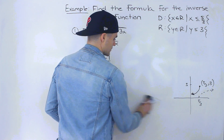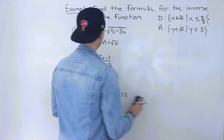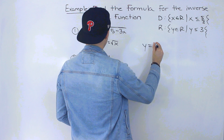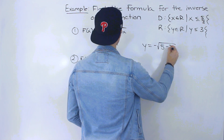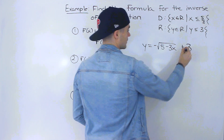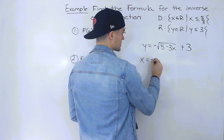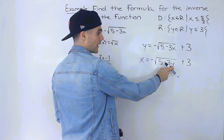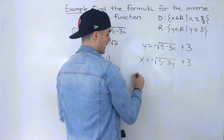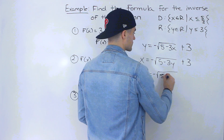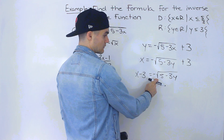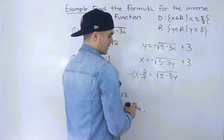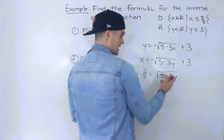Now that we have the domain and range, let's find the inverse. We rewrite the function and switch x and y, giving x = 3 minus √(5-3y). Isolate for y: bring the 3 over to get x - 3 = -√(5-3y). Divide both sides by -1 to remove the negative in front of the radical, giving -(x-3) = √(5-3y), which is the same as (3-x) = √(5-3y).